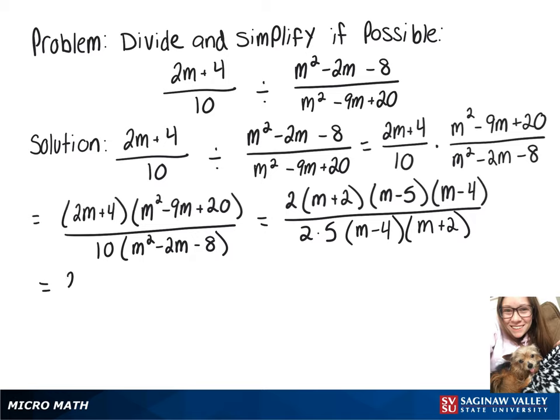To simplify we can write 2 over 2 times m plus 2 over m plus 2 times m minus 4 over m minus 4 times m minus 5 over 5.